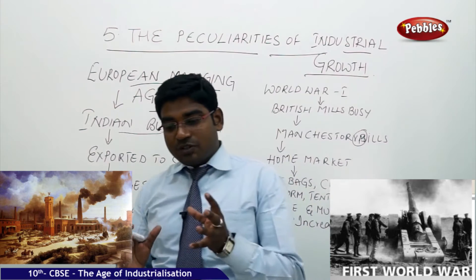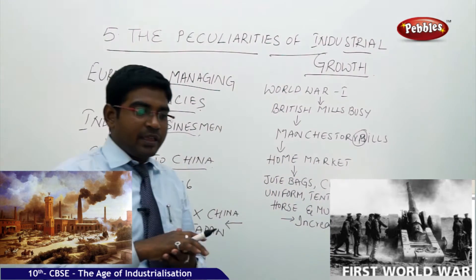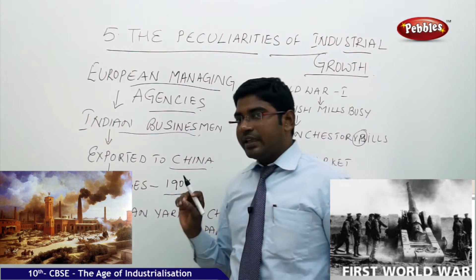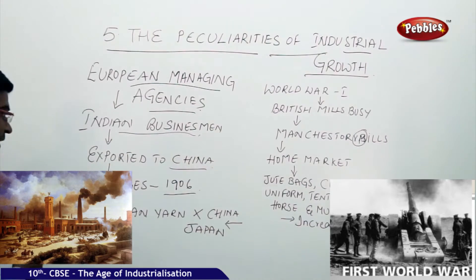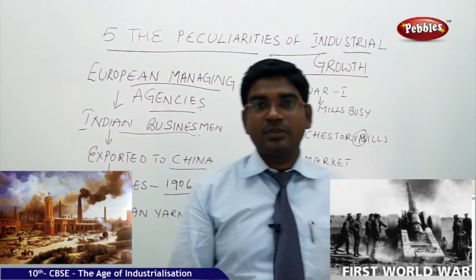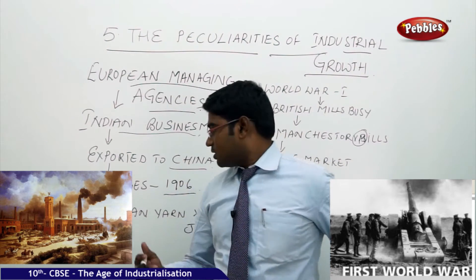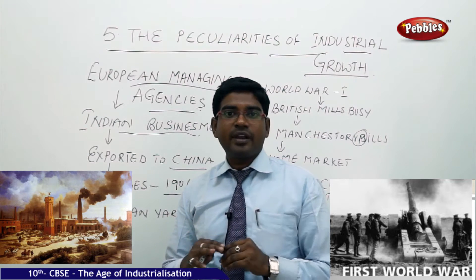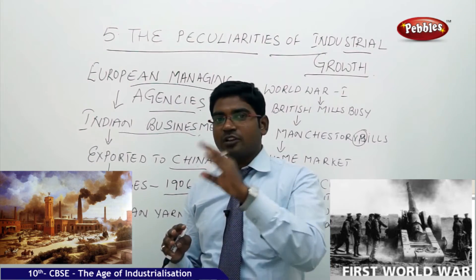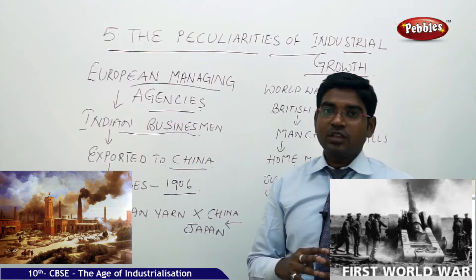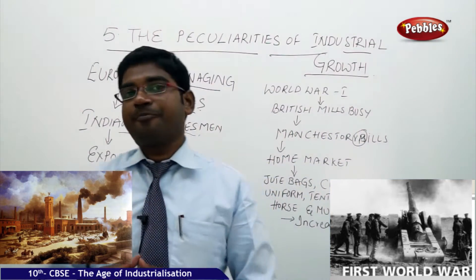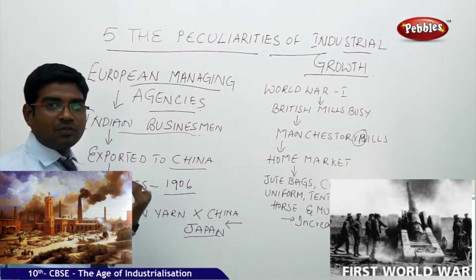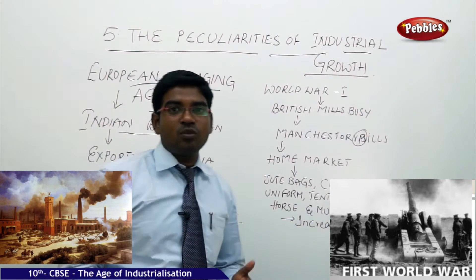They preferred to export their products towards China and other countries rather than Britain. But the situation changed completely in the early part of the 20th century in the wake of Japanese growth and development. By 1906, Indian yarn production had almost doubled, but Indian exports to China declined drastically because Japanese products started to flood into China at very low cost, influencing Indian trade.